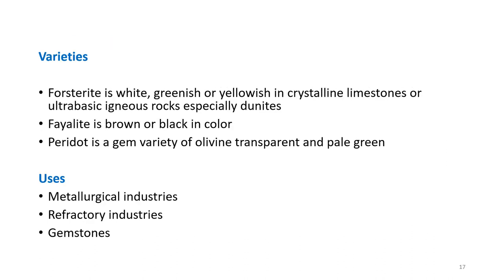Forsterite occurs as white, greenish, or yellowish crystals in crystalline limestones and in ultrabasic igneous rocks such as dunites and peridotites. Fayalite is brown or black in color. Peridot is the gem variety of olivine — transparent and pale green — and is used in metallurgical industries, refractory industries, as a gemstone, and in other industries.